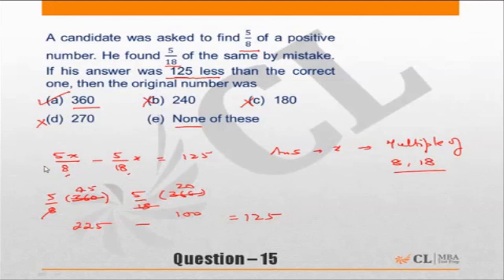So in this question, while this is not a difficult calculation, you can still save time if you just focus on the denominator. My starting point was that x should be a multiple of both 8 as well as 18. Since B, C, and D—240, 180, and 270—they are not multiples of either 8 or 18, so they have to be incorrect. After the remaining two choices is 360 and none of these, I verified 360. 360 into 5/8 and 360 into 5/18, it gave me a difference of 125, so that had to be the correct answer and hence I mark the answer choice A.